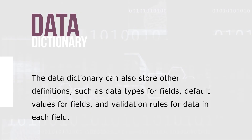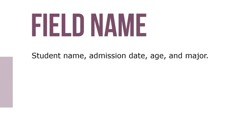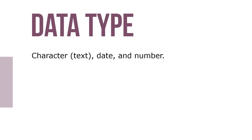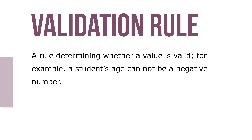The data dictionary can store definitions such as data types for fields, default values for fields, and validation rules. For example, the field name could be student name, admission date, age, or major. The data type would be a character like text, a date, or a number. The default value is the value entered if none is available — for example, if no major is declared, the value is 'undecided.' The validation rule determines whether a value is valid — for example, a student's age cannot be a negative number.